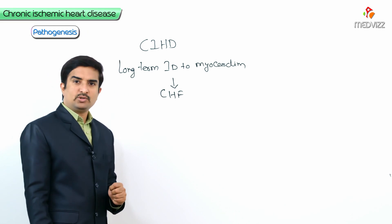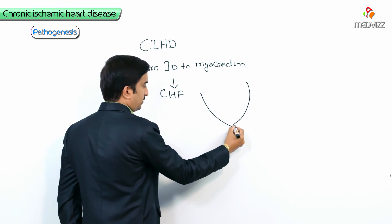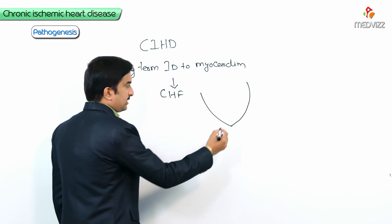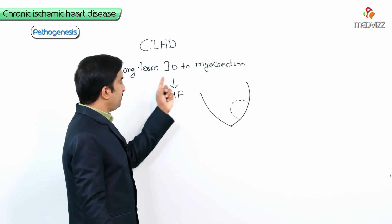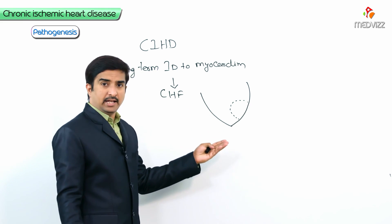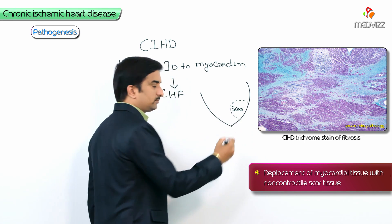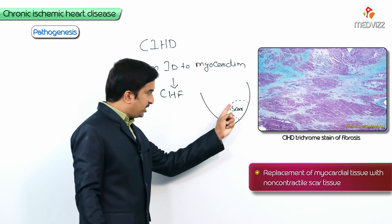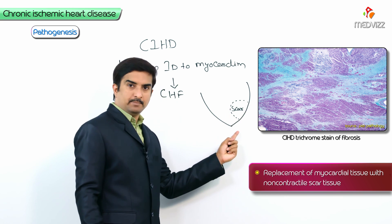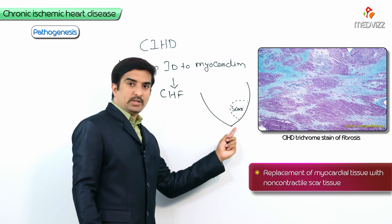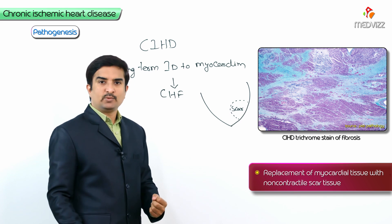So what is the pathogenesis here? If we take this as the ventricle, there is an infarcted area because of long-term ischemic damage. In later stages, the infarcted area is replaced by the development of scar tissue. Remember that scar tissue is non-contractile in nature — whatever scar is developed at the area of the necrotic tissue cannot take part in contraction.